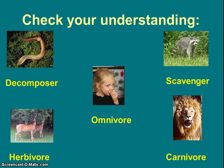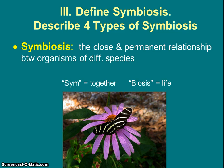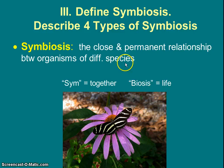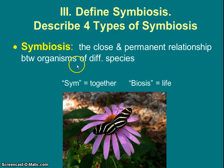Remember the notes were called relationships and symbiosis. For Roman numeral three, let's learn what symbiosis means and then describe the four different types. Symbiosis means close permanent relationships between organisms of different species. Breaking down the word: the prefix 'sym' means together and 'bio' means life, so this means life together.